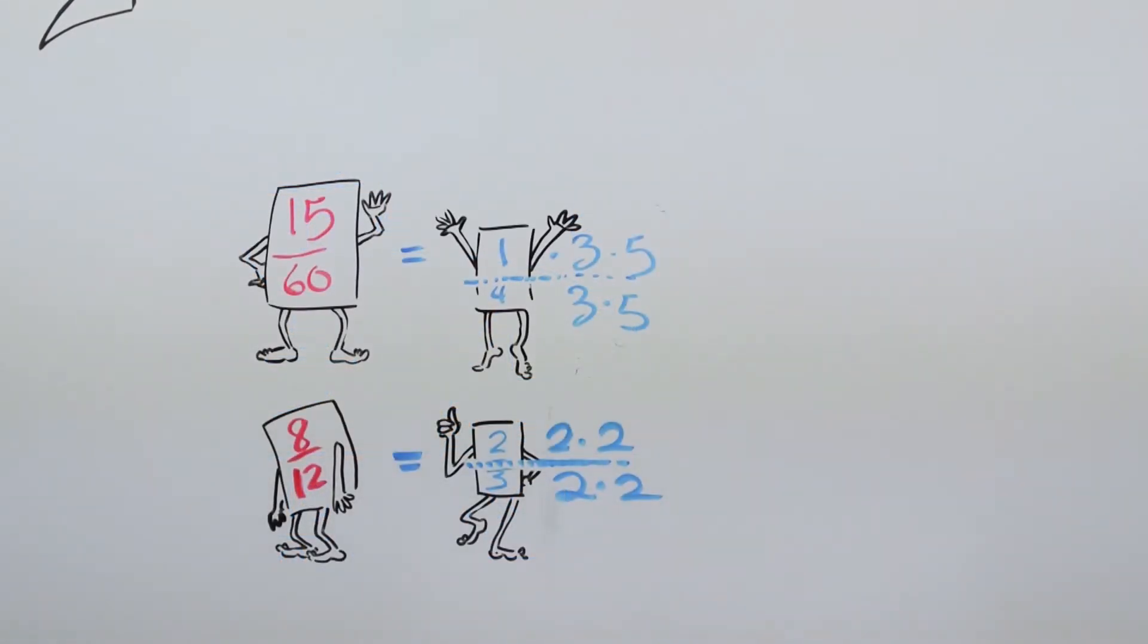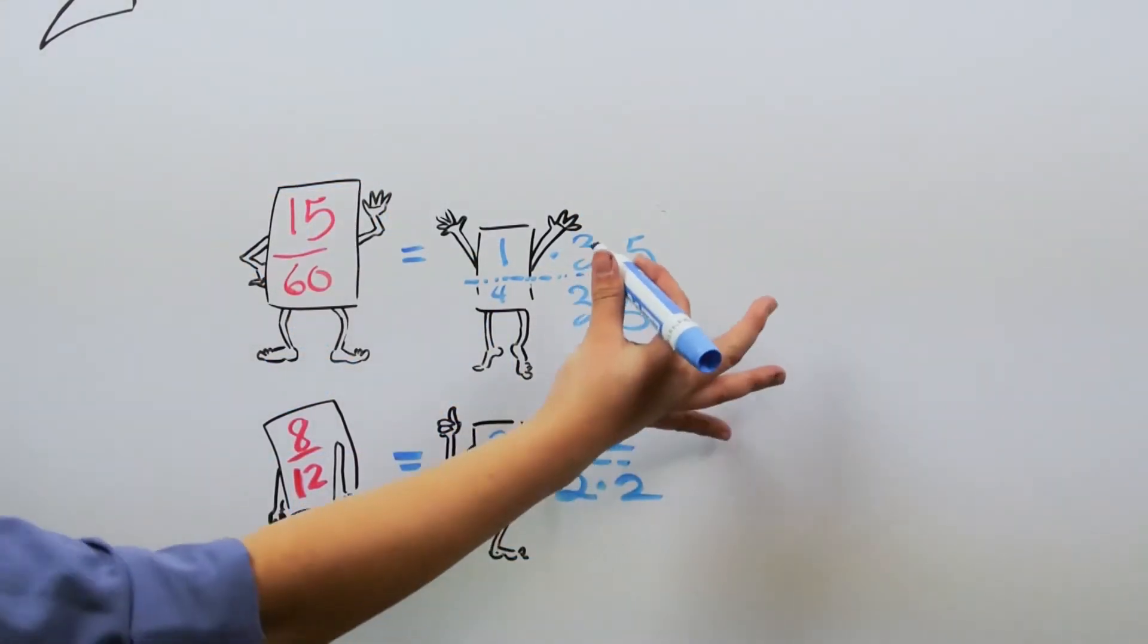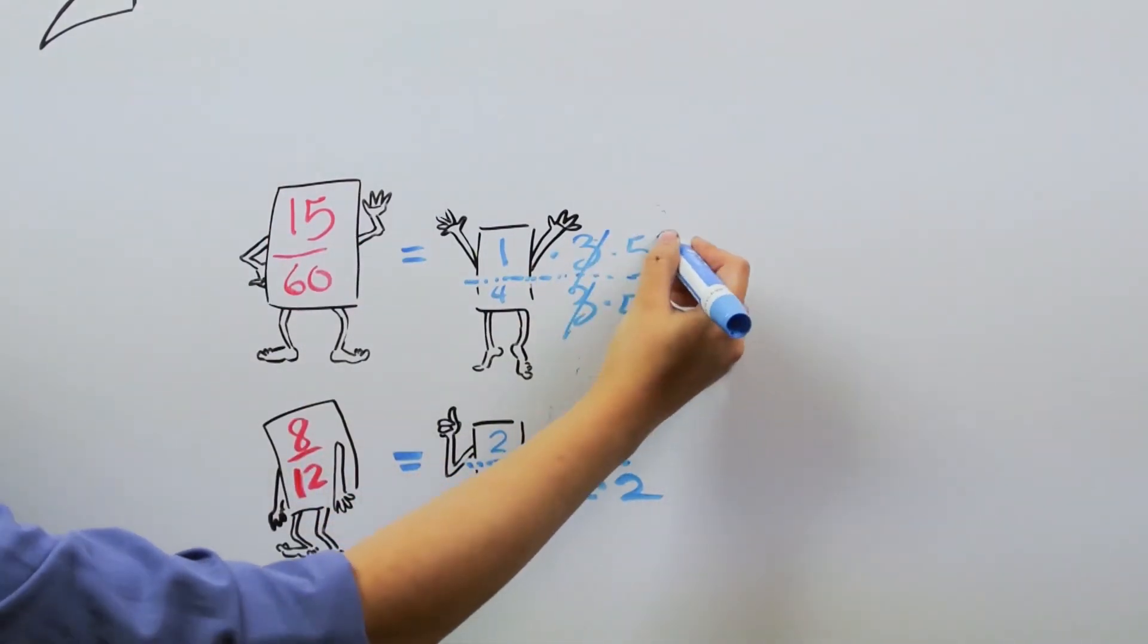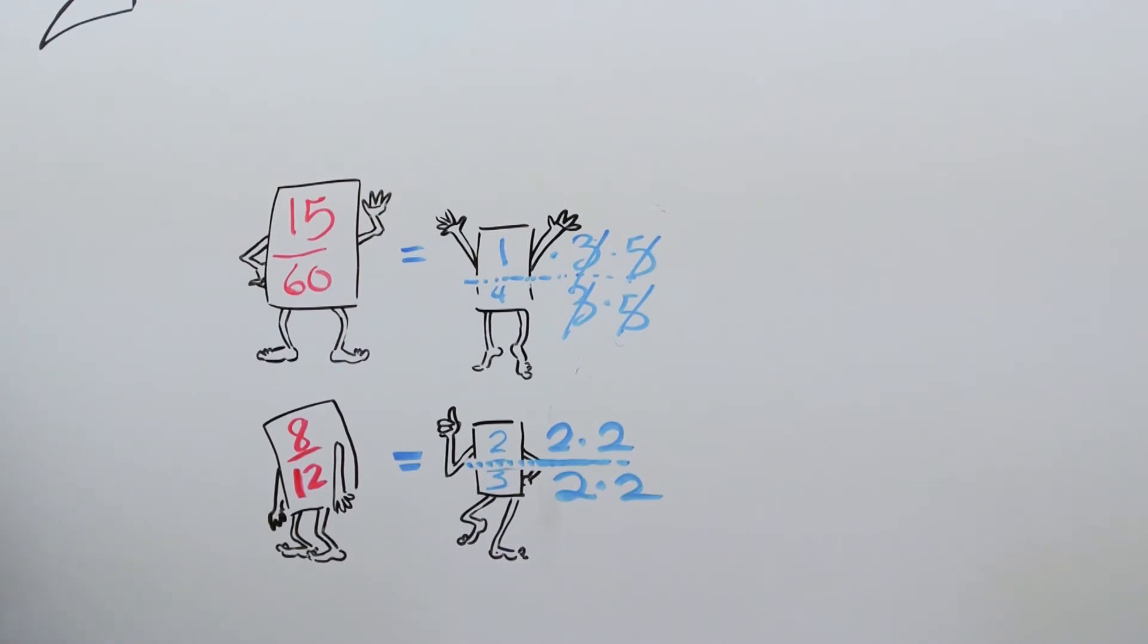So for some other quick examples, we can clearly see that the primes 3 and 5 come out of 15/60, leaving us with 1/4 as our reduced answer.